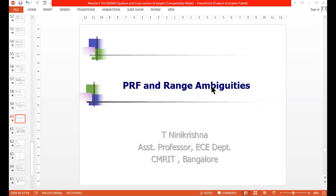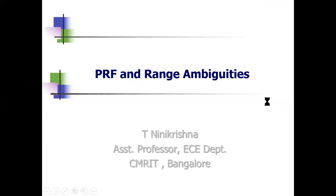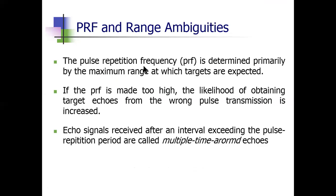This is the last topic of Module 2: PRF and range ambiguities. This topic follows transmitter power and the integration of radar pulses. The term PRF — pulse repetition frequency — is already known. This pulse repetition frequency is primarily determined by the maximum range at which targets are expected.